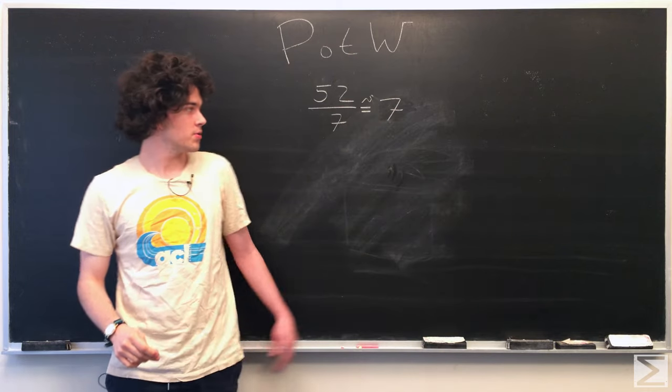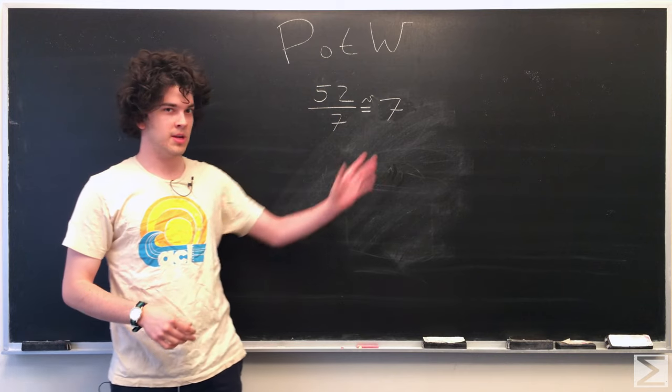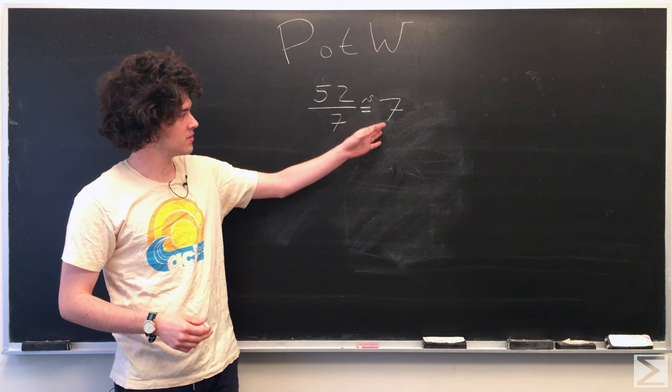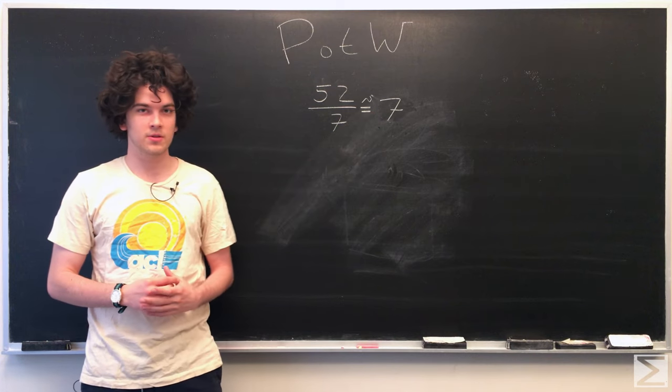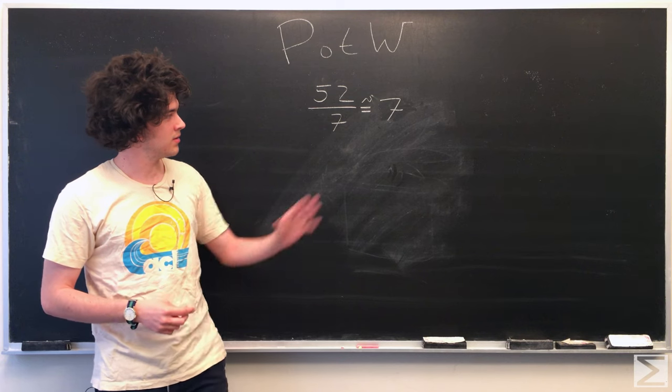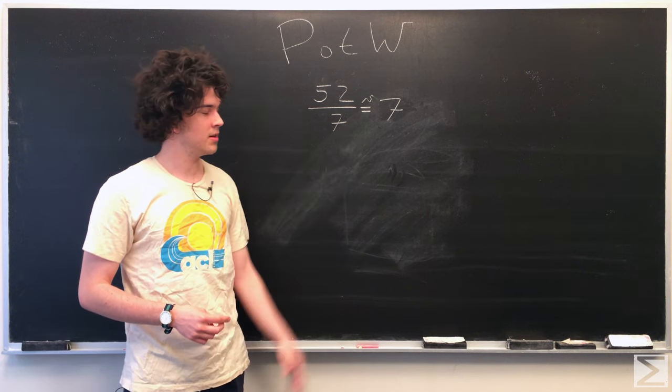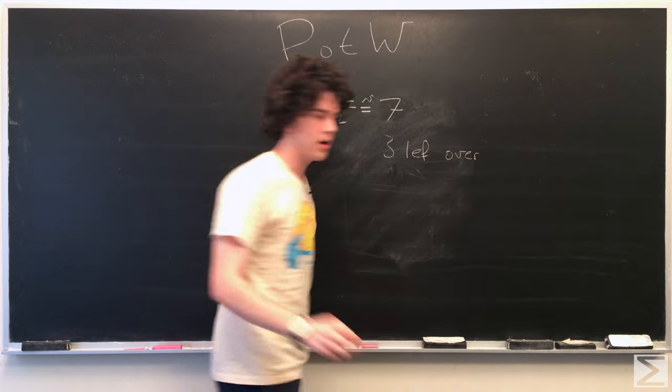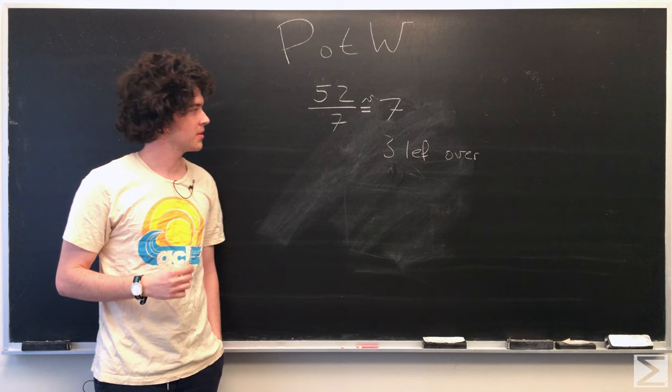So first we divide 52 by 7. And so we'll be able to create about seven ears of corn out of this 52 husks. And if you notice, if we multiply by seven, we have 49, so we have three left over. That might come into play later.